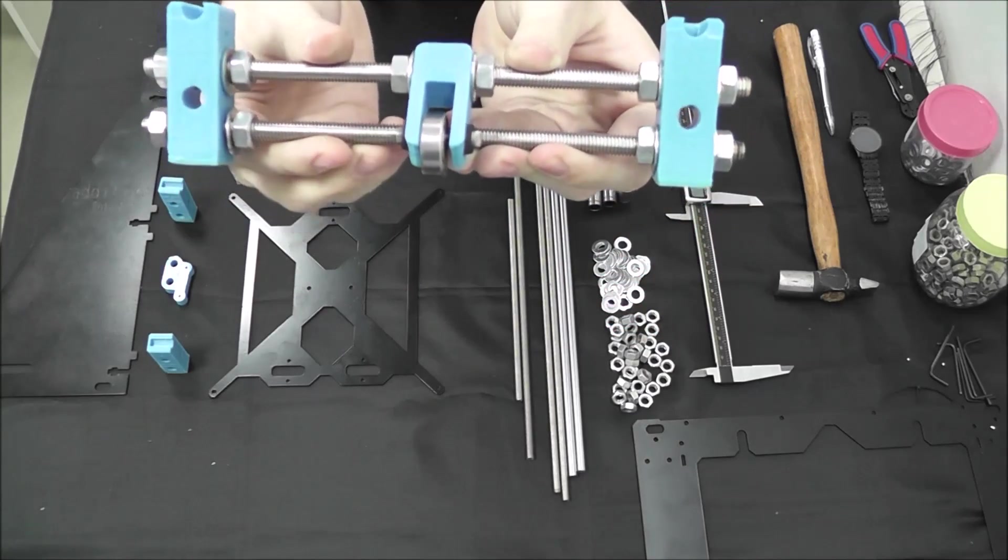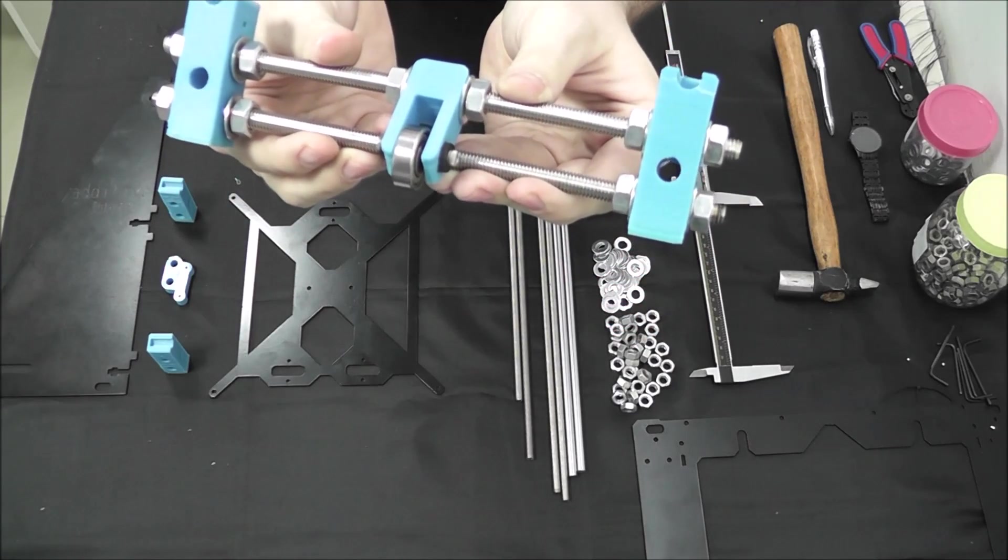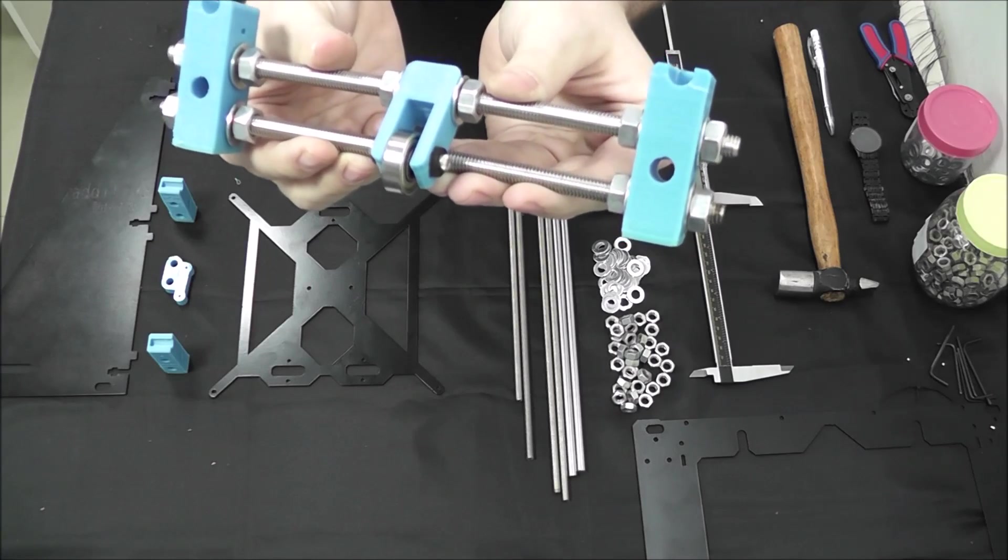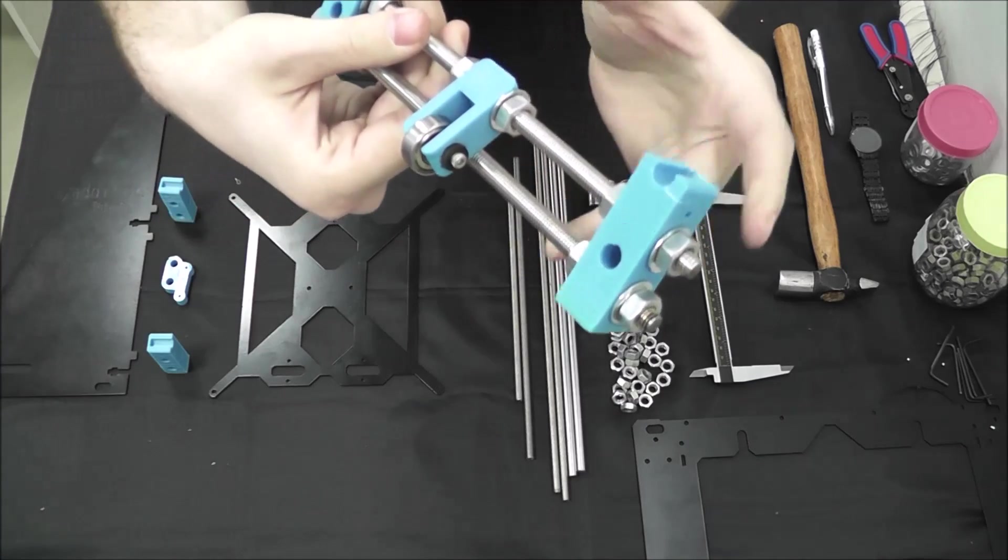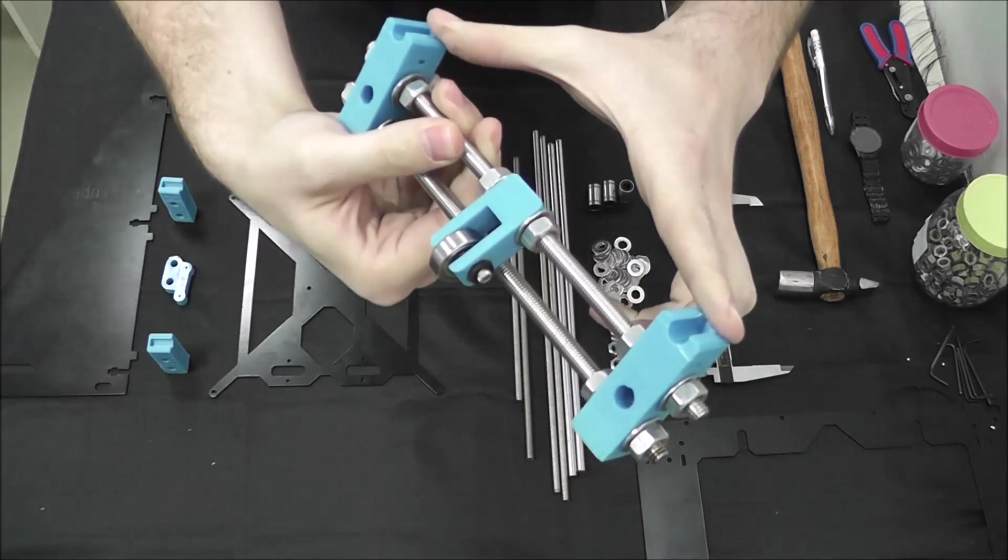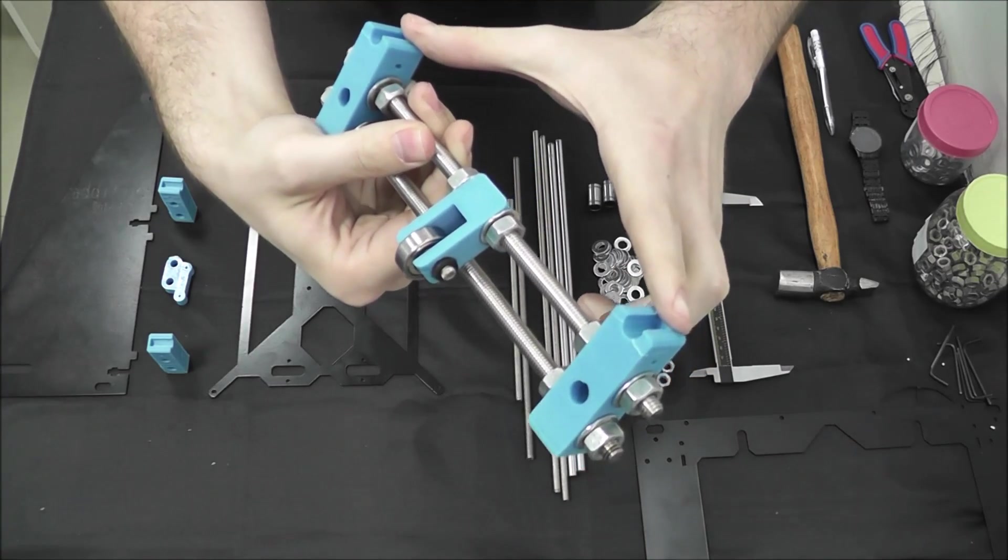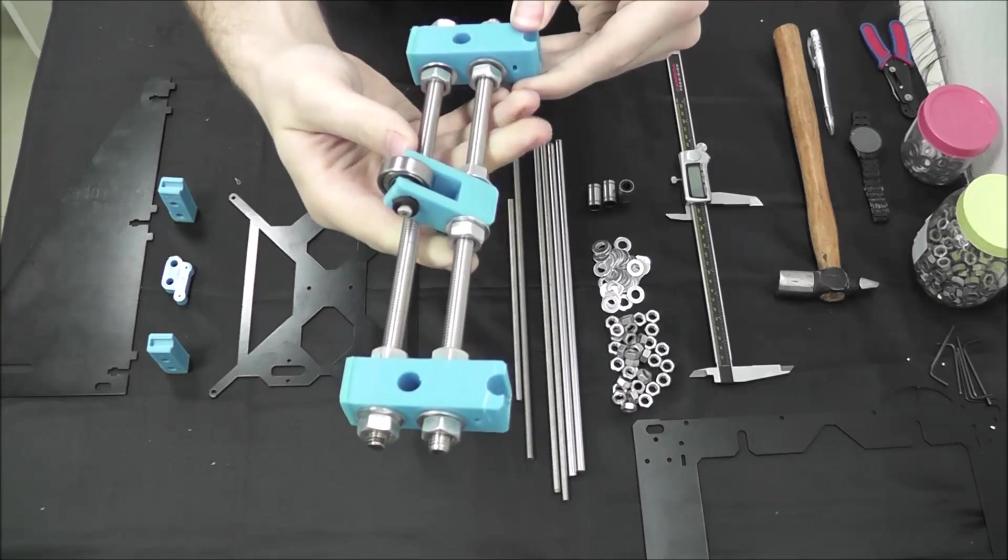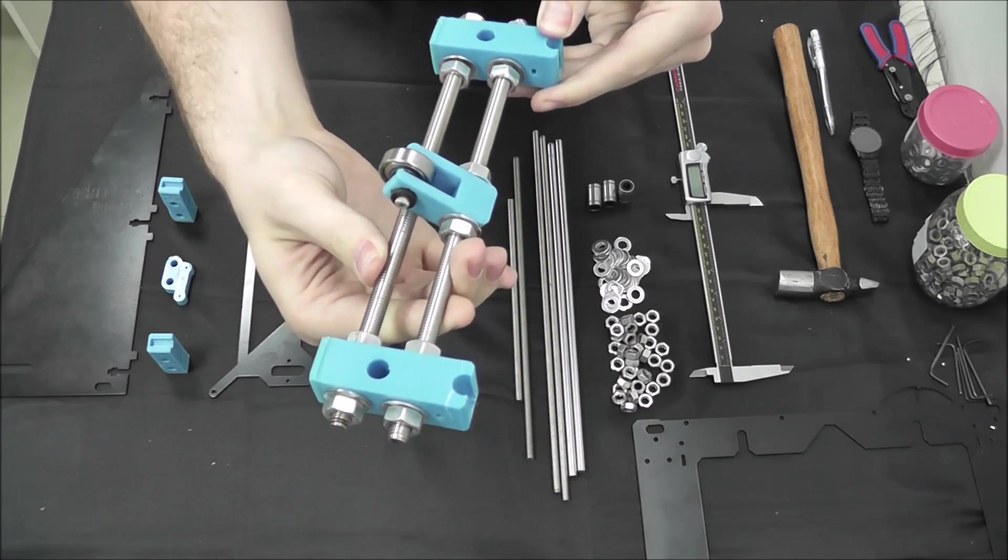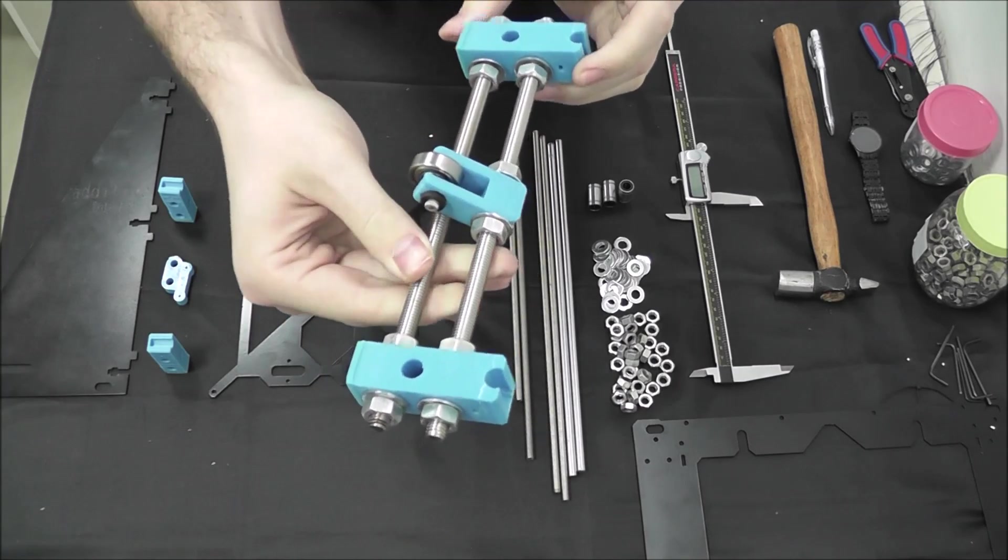As you can see on every point of contact between the plastic and the rods there is an M8 nut and M8 washer. The distance between these two will be very important but we'll get to that in a little bit. You'll also notice that for this piece we've used two 210mm threaded rods.